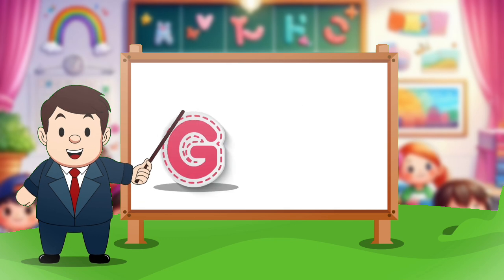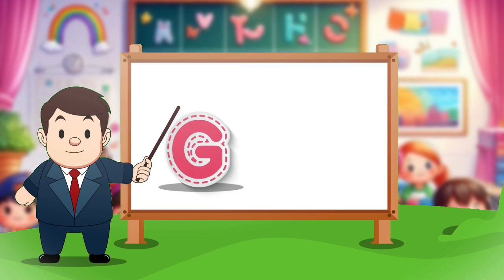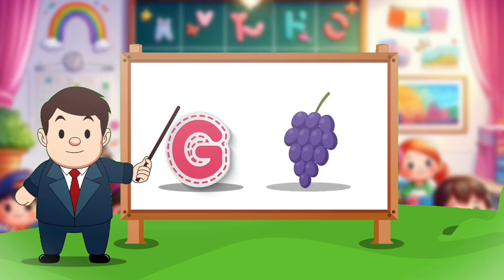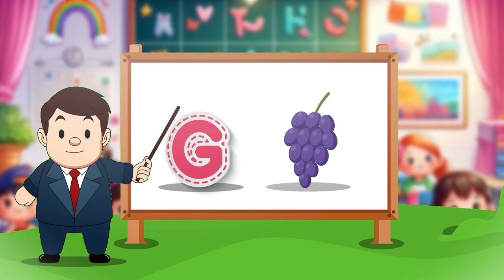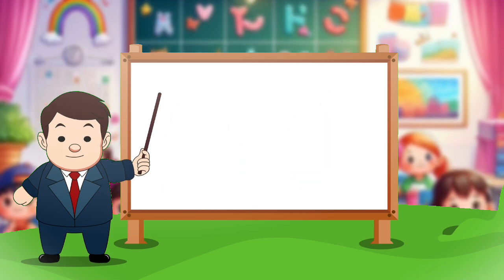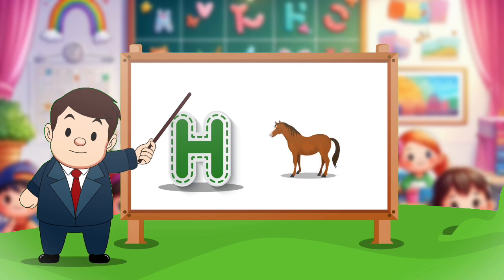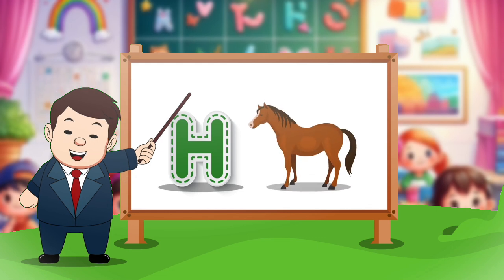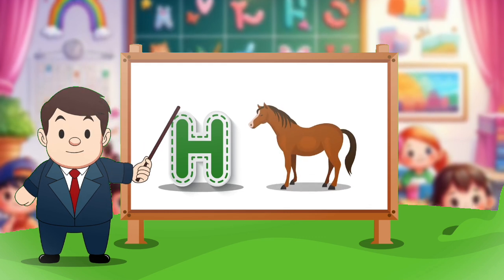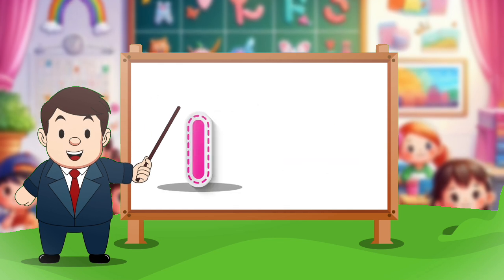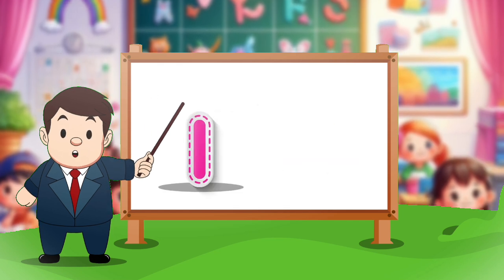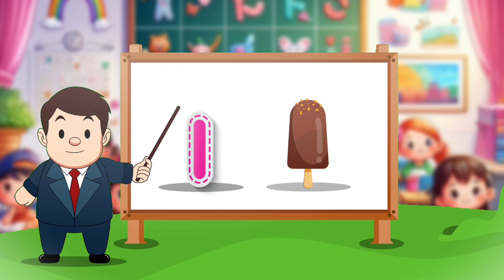G. G for crab. H. H for horse. I. I for ice cream.